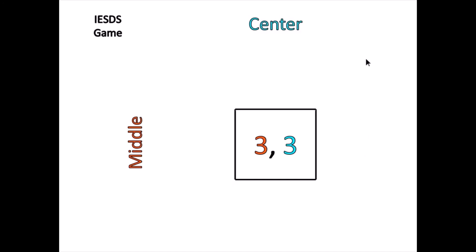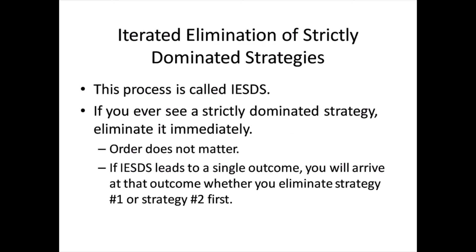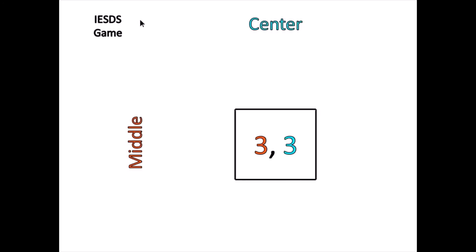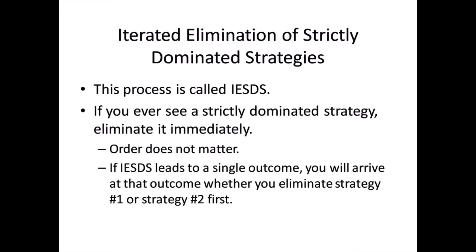The reason we reached that solution is because the players were inferring a lot about each other — inferring their intelligence and inferring that they wouldn't play particular strategies based on that. That allowed us to go through a cycle: eliminating right, then eliminating down, then eliminating left, then eliminating up, which eventually takes us to just middle and center. We call this process Iterated Elimination of Strictly Dominated Strategies — IESDS. It gets that name because we went through a series of strictly dominated strategies: first right, then down, then left, then up.